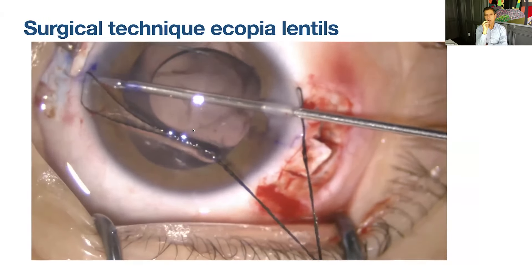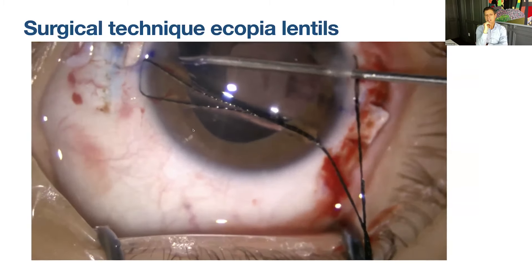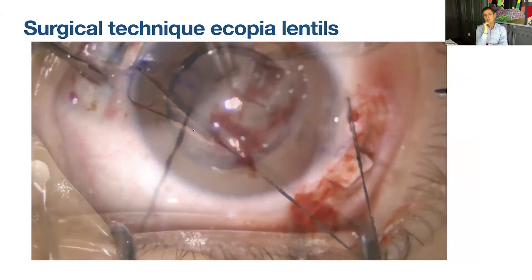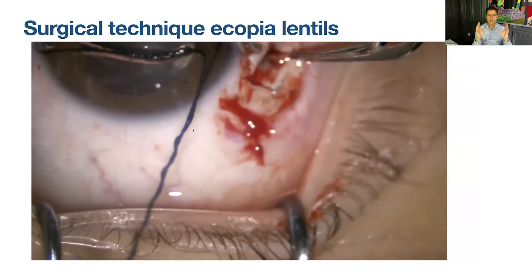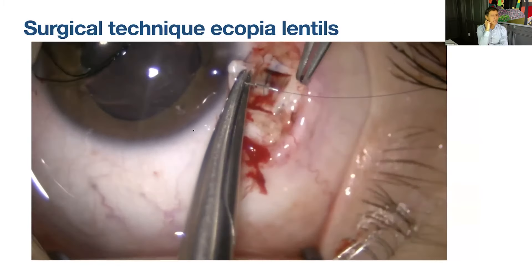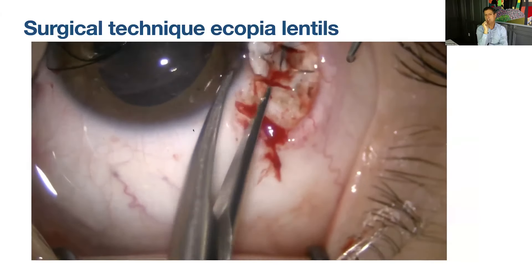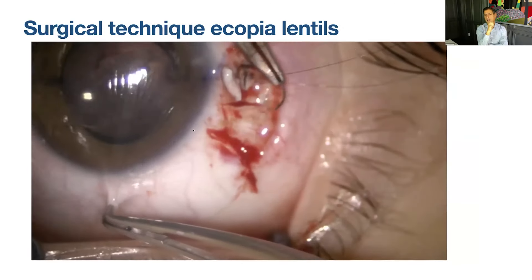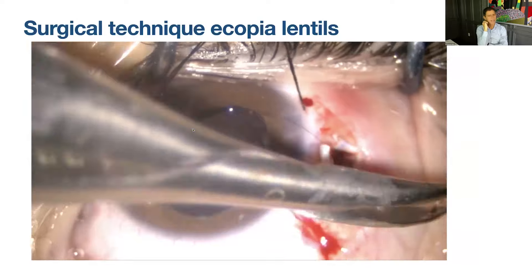These are very young patients — we want our technique to be very slick and refined, interfering with the vitreous as little as possible. Once you exteriorize the haptics, tuck them into the tunnels and center the lens. I like to place a suture closing the sclerotomy — an X suture, double-pass suture — which closes the sclerotomy and holds the haptic in place. Then close the scleral flaps and close the conjunctiva with 7-0 Vicryl. With this technique, if you take all the measurements correctly, the lens is very well centered with seldom tilt.